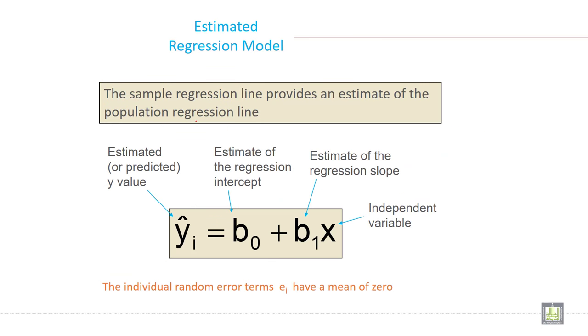Now the estimated regression model. The sample regression line provides an estimate of the population regression line. y-hat equals b0 plus b1x. This is the simpler regression equation model.